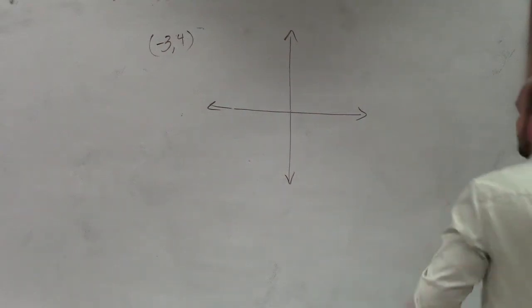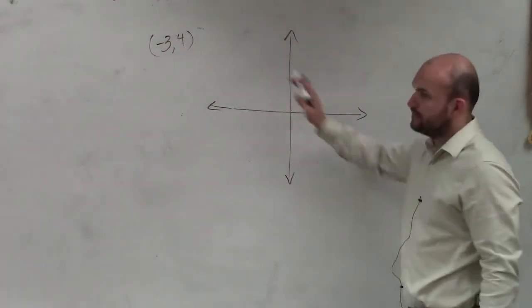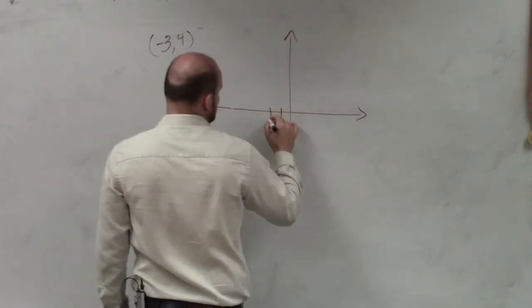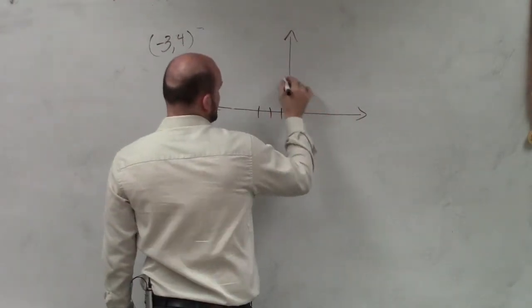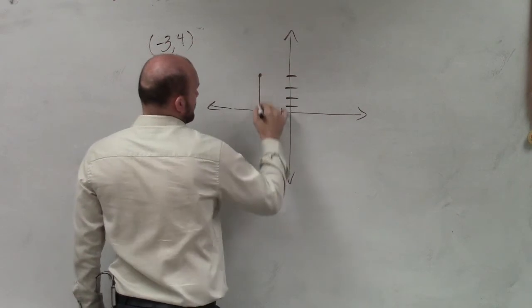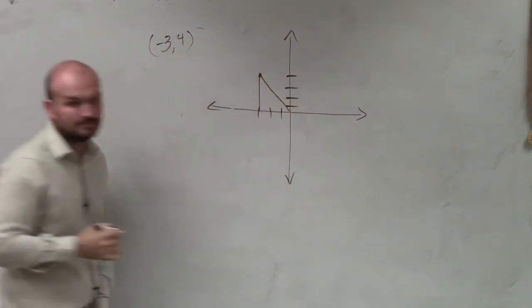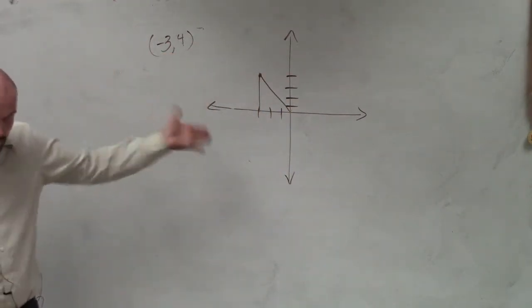As we spoke about, to convert this to polar coordinates, let's go and look at this point. Negative 1, 2, 3, up 4. 1, 2, 3, 4. That is our coordinate.